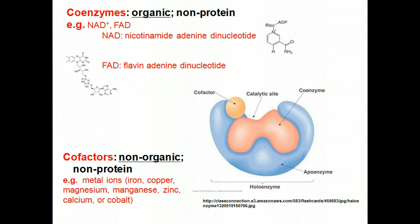Here's my slide where I mention again what the cofactors are. They are metal ions, as I mentioned — calcium, manganese, and magnesium. There's also iron, copper, zinc, and cobalt. These are all part of your multivitamins that you take — they also have these metal ions in them.